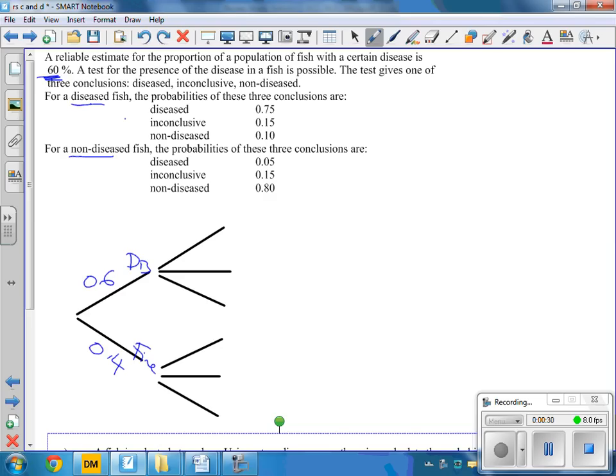And then we're going to take a test on it. And they're either going to be diseased or it's going to be inconclusive or it's going to be fine. Diseased, inconclusive or fine, no disease. And we put these probabilities on.